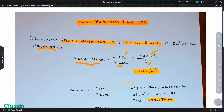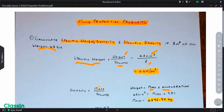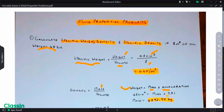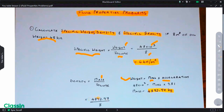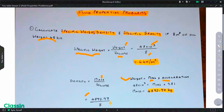We know that weight is equal to mass multiplied by gravitational acceleration g. So density is mass over volume. We don't have the mass directly, but we can calculate it from the weight: 48 kilonewtons divided by gravitational acceleration 9.81, which gives us the mass. Then we plug in the mass — 4892.97 kg — divided by 8 cubic meters.